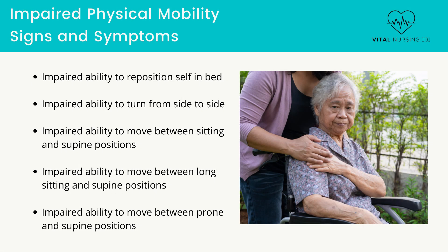How can you, the nurse, tell when a patient is experiencing impaired physical mobility? They may have impaired ability to reposition self in bed, impaired ability to turn from side to side, impaired ability to move between sitting and supine positions, impaired ability to move between long sitting and supine positions, and impaired ability to move between prone and supine positions.